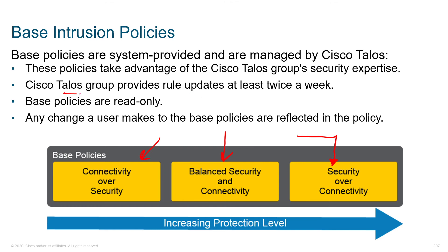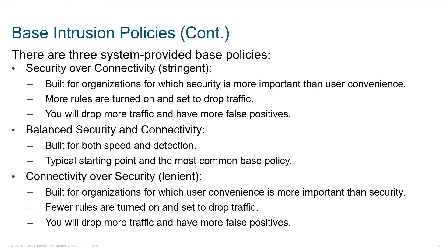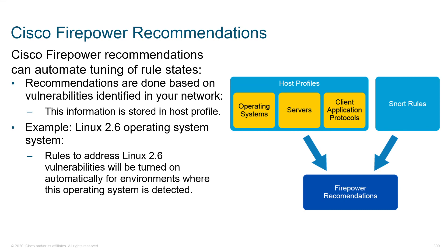You can expect the Talos group to provide rule updates about twice a week. That gives you two different things: new signatures, and also old signatures with new revisions — making them more accurate and less likely to trigger false positives. So fixed-up versions of old signatures and new signatures are what we can expect twice a week. Cisco's Firepower recommendation is to go with the balanced flavor and then perform some tuning afterwards.